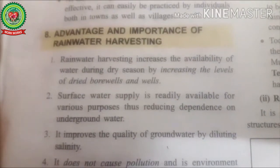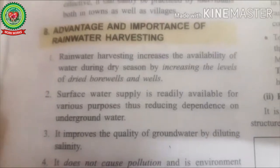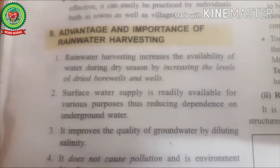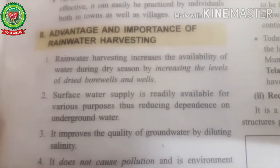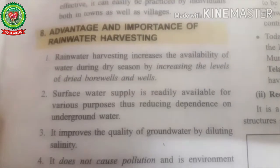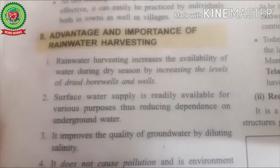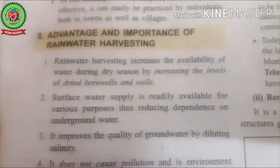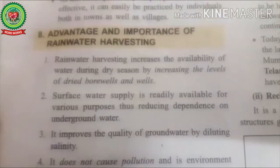Now let's look at the advantages of rainwater harvesting. It helps in increasing the groundwater level, helps during drought and dry season, and is cost effective with low initial setup cost. Rainwater harvesting increases the availability of water during dry seasons by increasing the level of dried bore wells and wells. Rooftops are connected to dried wells, tube wells, and hand pumps through PVC pipes, channelizing water into them and increasing their water levels. Surface water supply becomes readily available, reducing dependence on underground water.